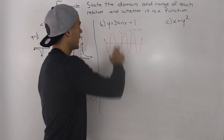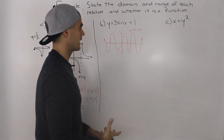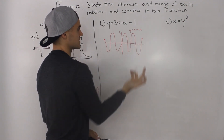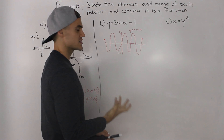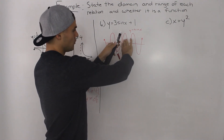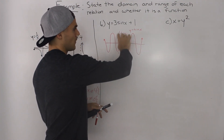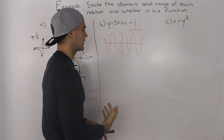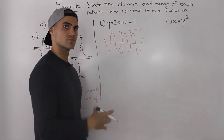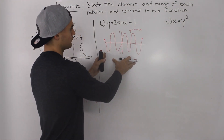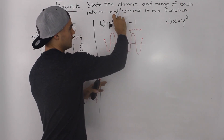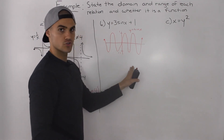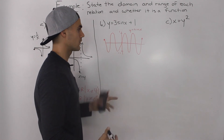Moving on to part b, we have y = 3sin(x) + 1. To start, I drew out the parent function y = sin(x). The domain of sin(x) goes on forever — it's a wave alternating between a max value of 1 and a minimum value of -1. What you would do is take the parent function, shift it up by 1, and vertically stretch it by 3 so the amplitude would be 3, then graph the new transformed function, making it easy to identify the domain and range.